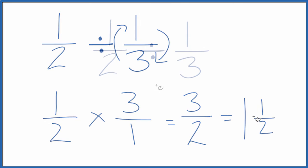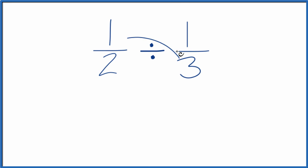There's one more way we could do it. We could take one times three, that's three, and two times one, that's two. And we end up with three over two. Same answer we got before. This is really the same thing we did before with the reciprocal.